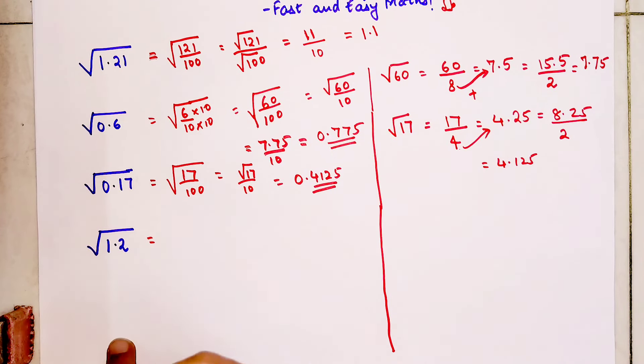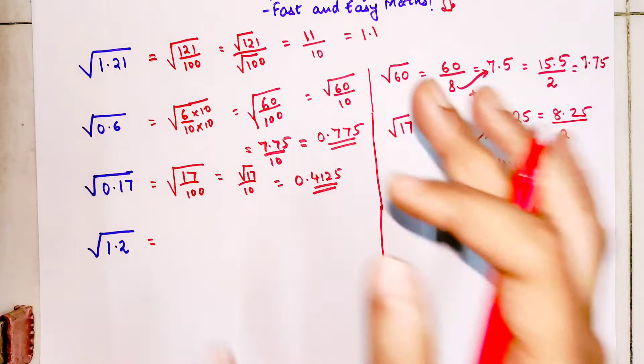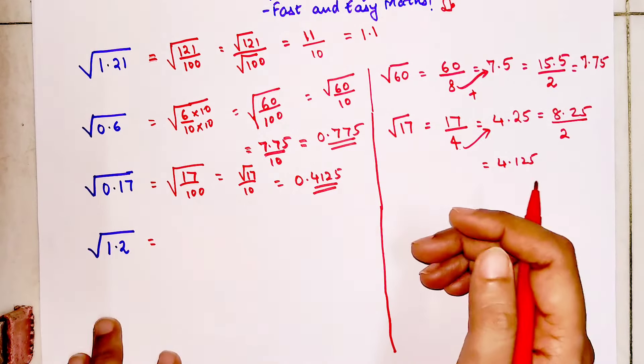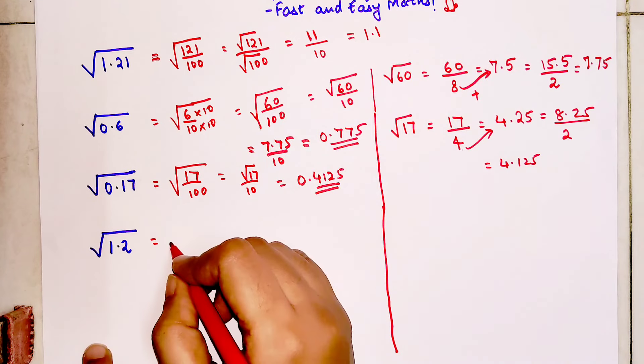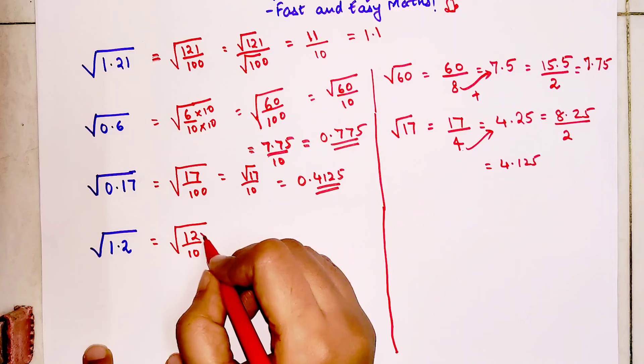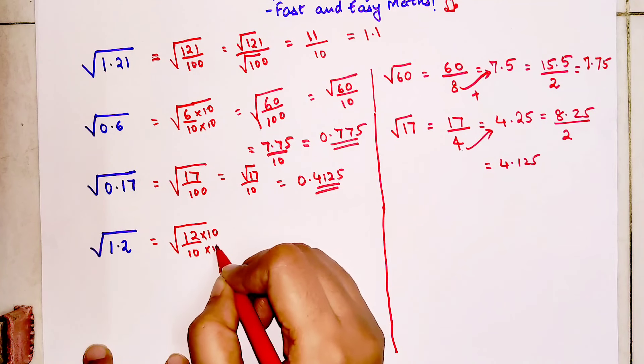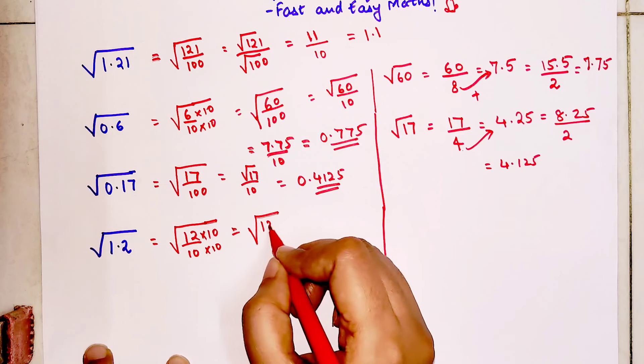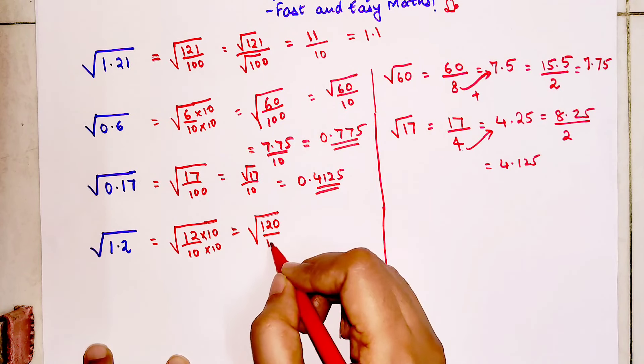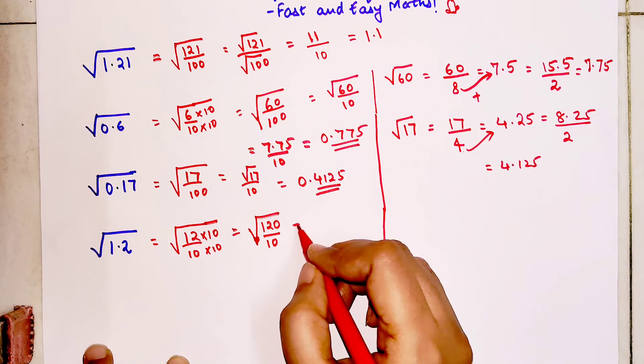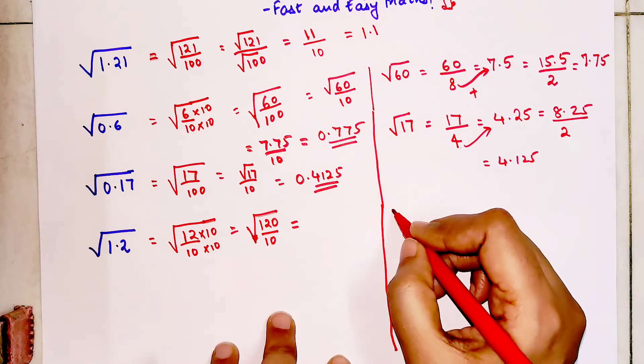But like I said, for any trick to settle in, to settle in your head, you need to practice it with at least 10 to 20 sums. Now very quickly, this can be written as 12 upon 10, so this will get multiplied by 10 and 10 to make it 100 in the denominator. So I'm having 120 upon 10. Sorry, the square root is not over here.